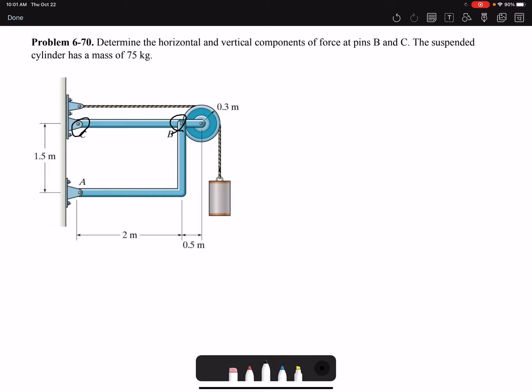Looking at the problem, we can identify that member AB is a two-force member. A two-force member means that it has only forces being applied at two points, point B and point A. One of the conditions of a two-force member is that the two forces have to be equal, opposite direction, and collinear.